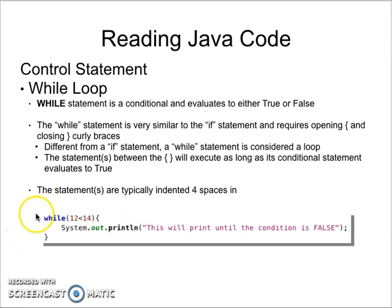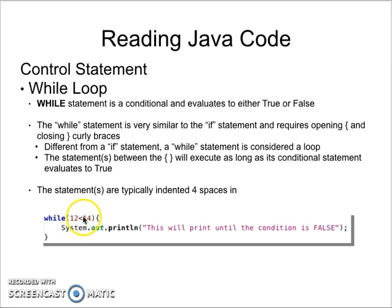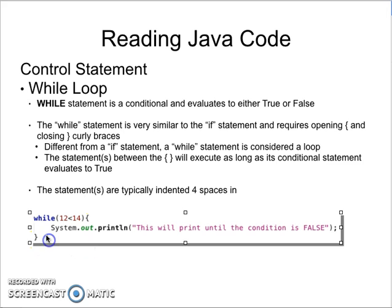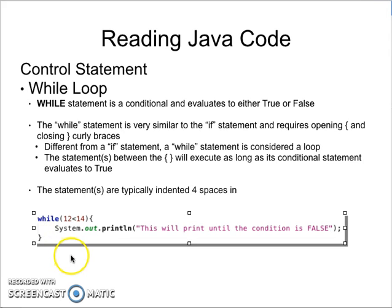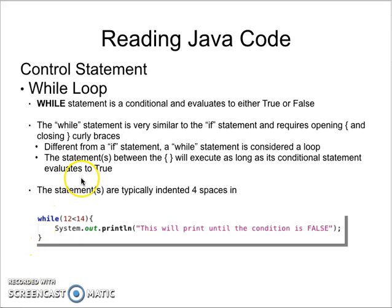It uses the same typical four-space indentation, but here's the danger with while loops: say you write while 12 is less than 14. Once we start this loop, we'll be caught in what's known as an infinite loop, because 12 will always be less than 14. It will print, hit the closing curly brace, come back to the top, and repeat forever. You never want to create an infinite loop. You want to have a variable to control this loop so that at some point it can evaluate to false and exit. That's our while loop.